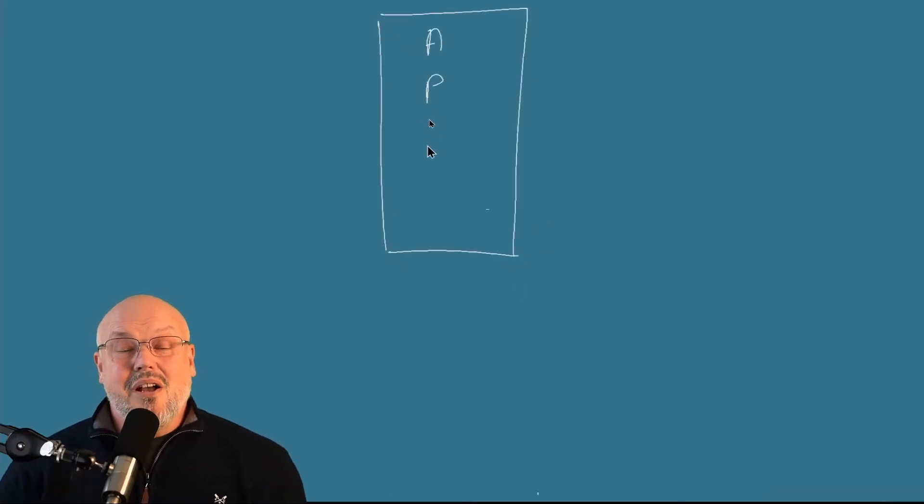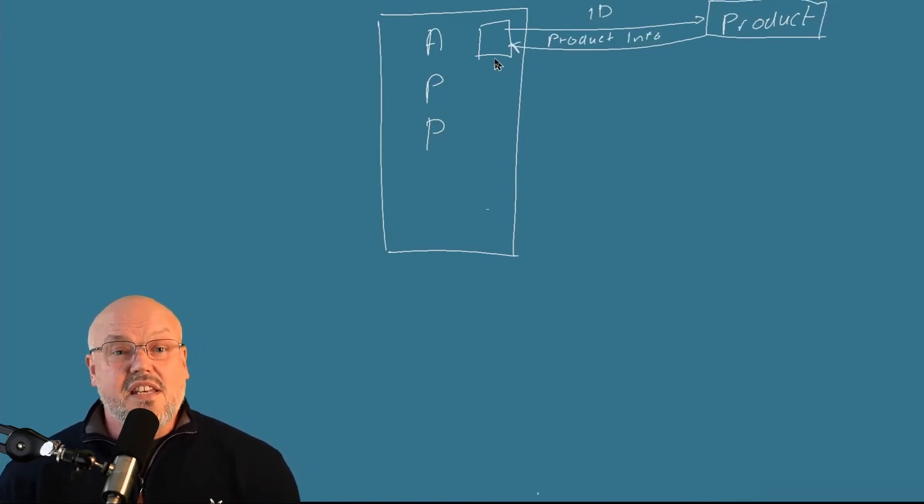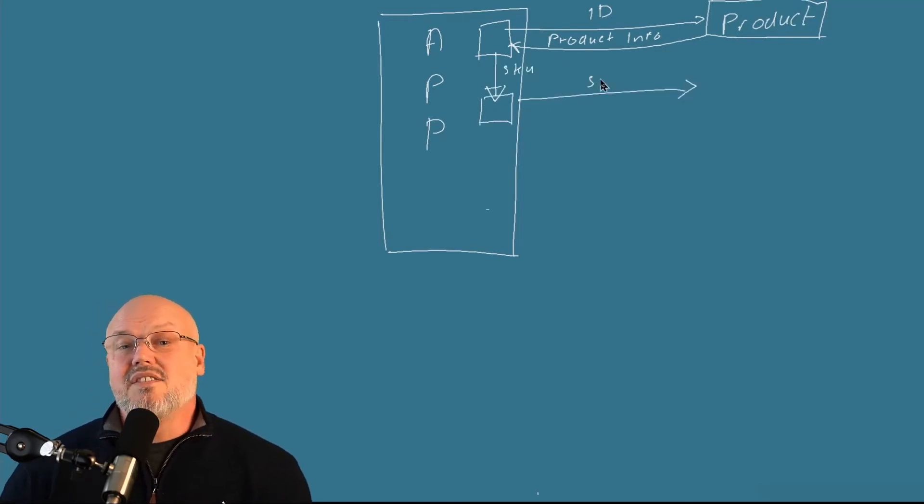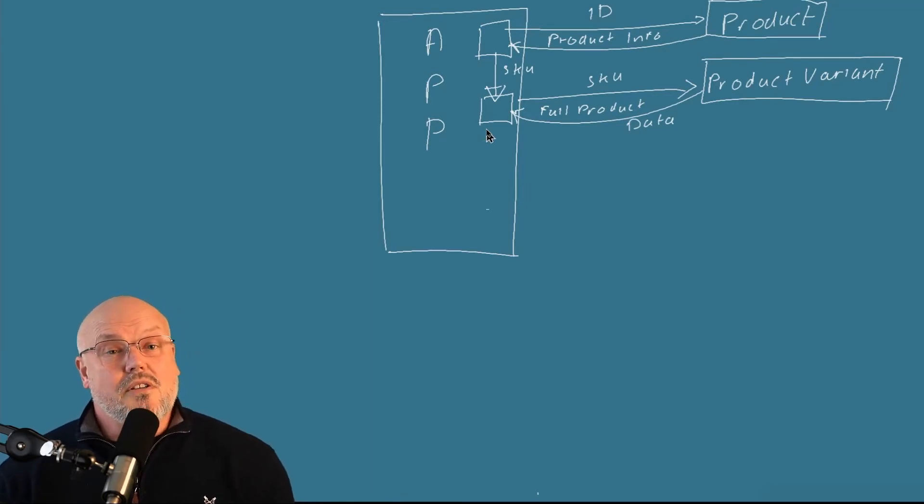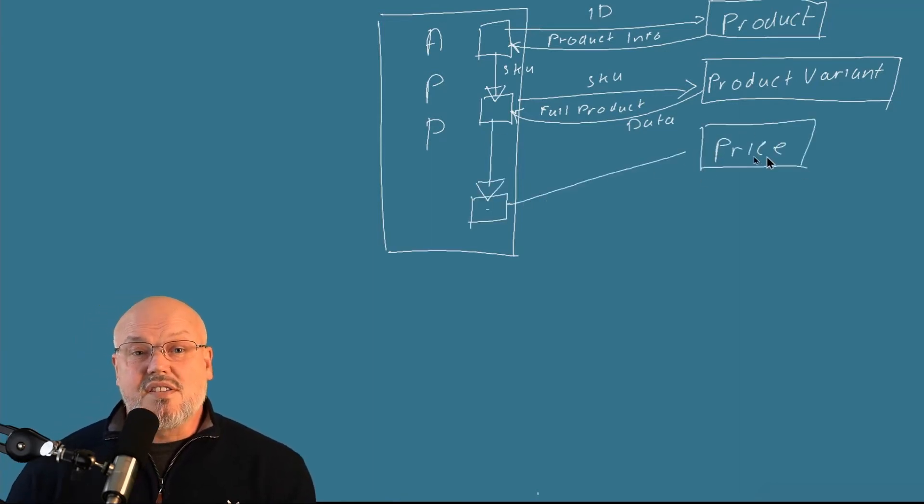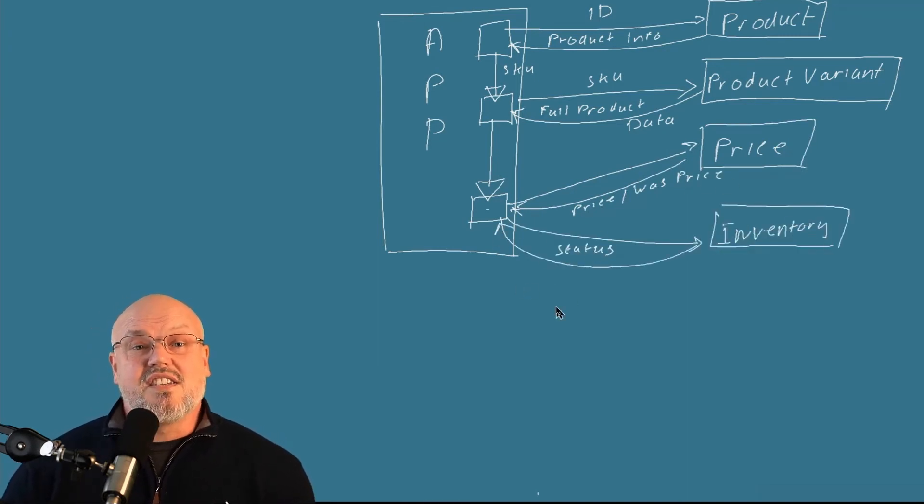For example, with our product details example, we first called the product service to get the basic product information like the name and the description. We then took a variant ID, a SKU, and we passed that into the variant service to get the full product details including the specifications. At this point you might also call other microservices to get the price or the inventory status.